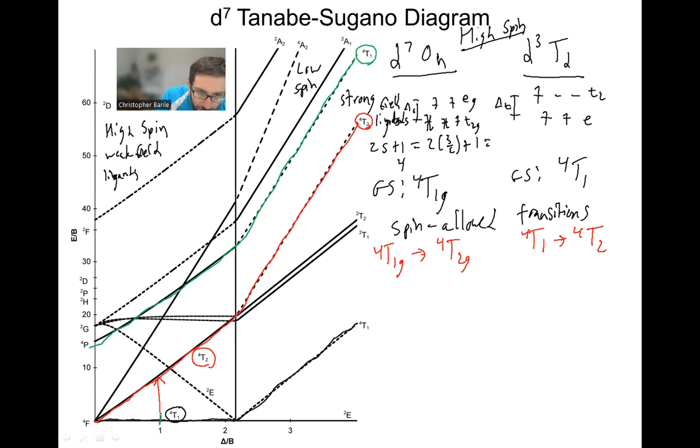But anyway, we can have a spin allowed transition. We have a spin allowed transition from the quartet T1G ground state to that green quartet T1G excited state. And I know what you're thinking. You're thinking, well, aren't these the same? They have the same name. Well, it just means they have the same symmetry, right? So no, they have different energies and electrons can get excited there. We just unfortunately don't have a way of distinguishing between the two names with this system.